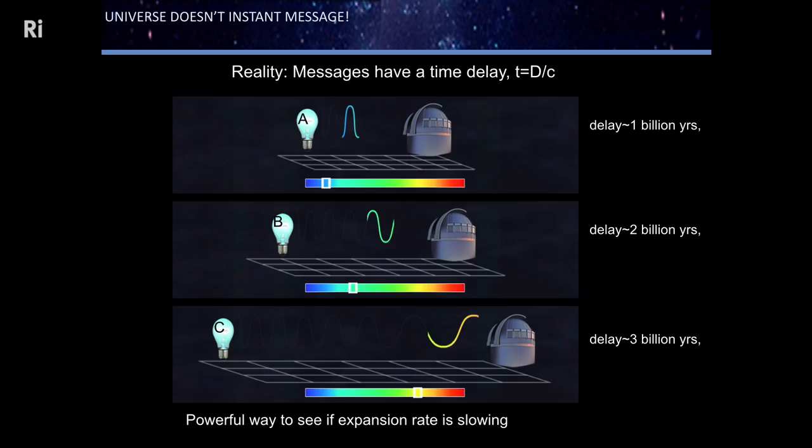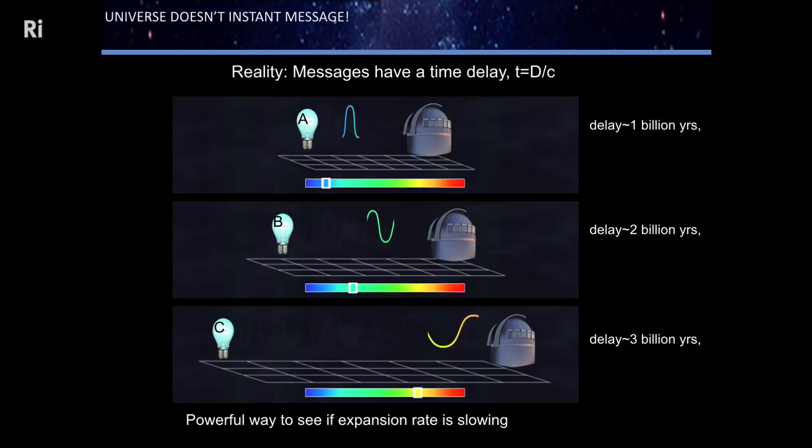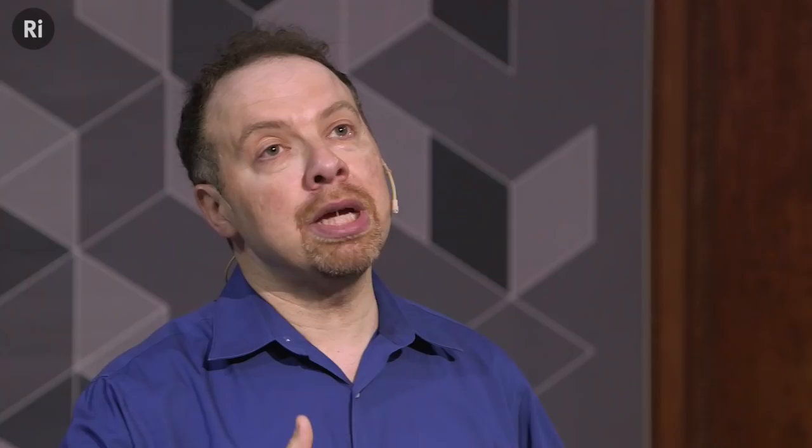This is actually very powerful for us. We can look at a distant standard candle—a supernova—that's more nearby and it might be telling us how fast the universe was expanding a billion years ago. A more distant object tells us two billion years ago, three billion, and so on. With this trick of looking back in time by looking out, we can not only measure the expansion rate but the expansion history of the universe. Just like when a geologist takes a core sample of the Earth and the deepest layers tell them about the past, we have the same ability in observational cosmology.